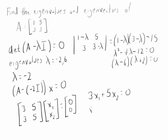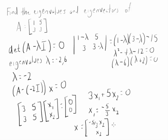Or X1 equals negative 5 thirds X2. So if we write out what X is, we're going to have minus 5 thirds X2 and then just X2 down here — or another way of writing that: X2 times negative 5 thirds comma 1.